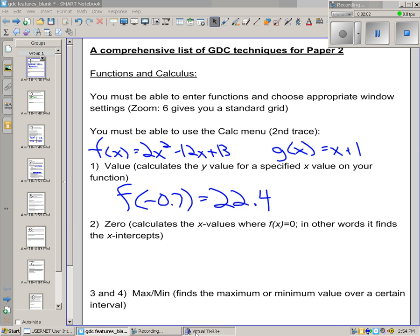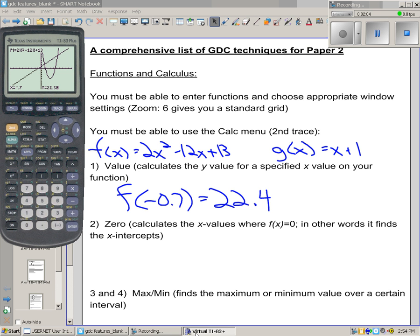Zeroes, these are the x-intercepts of a graph. So we could easily find the x-intercepts of, say, our parabola. Now, we've got to give it a left bound. And notice how it tells me up in the upper left corner that I'm looking at y1, at my parabola. So I'm going to go to the left of one of the intercepts and to the right and guess. It gives us a 0 at 1.42.